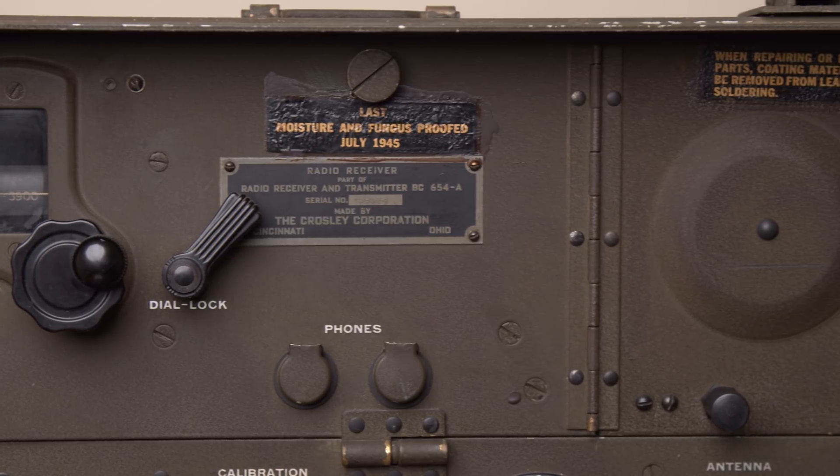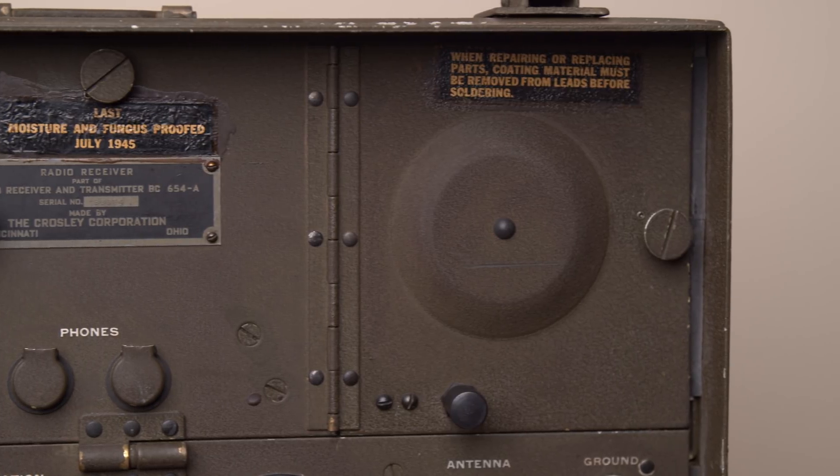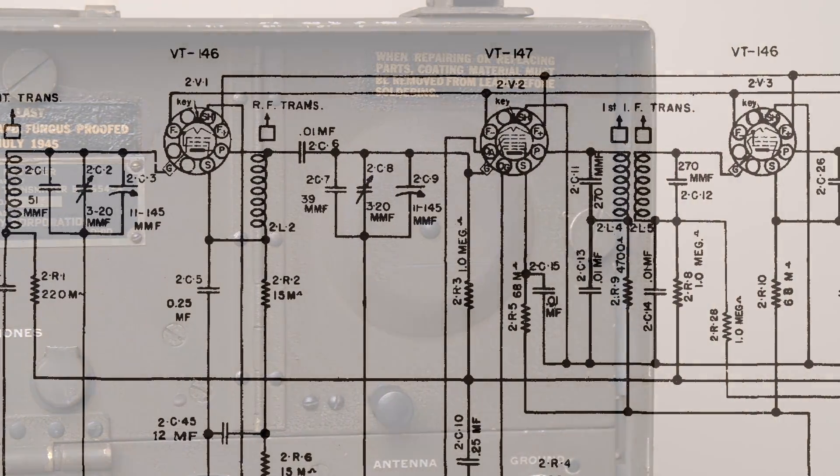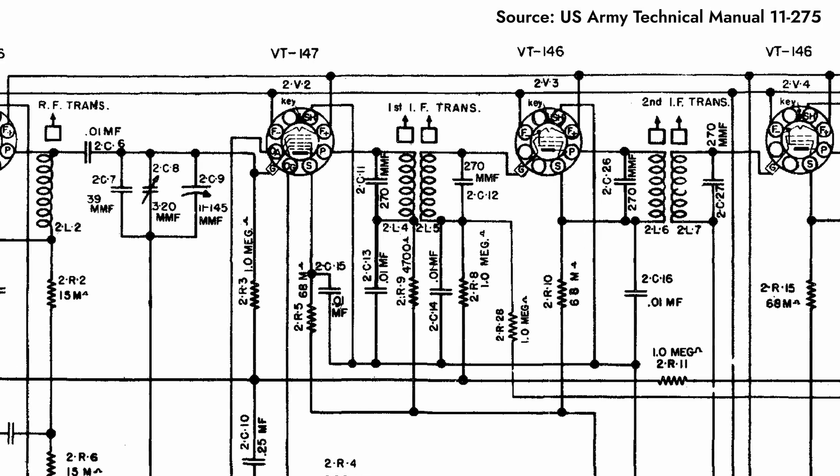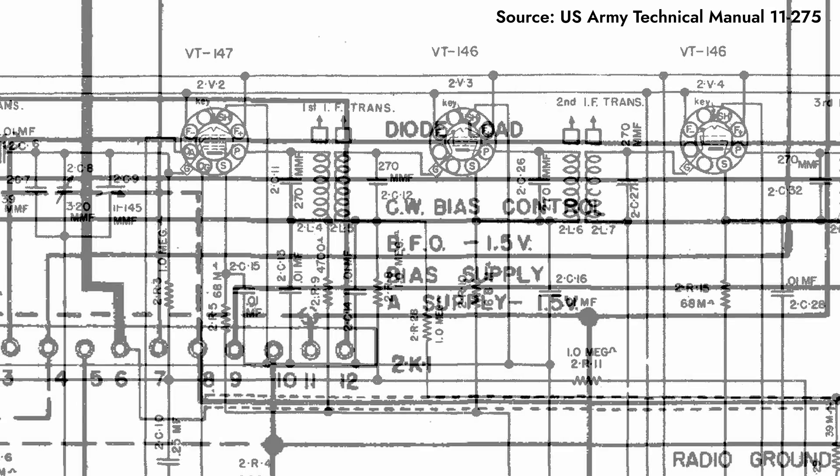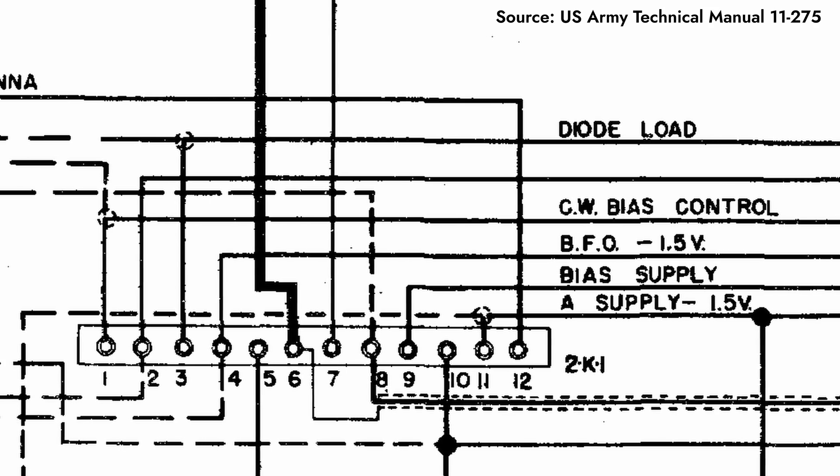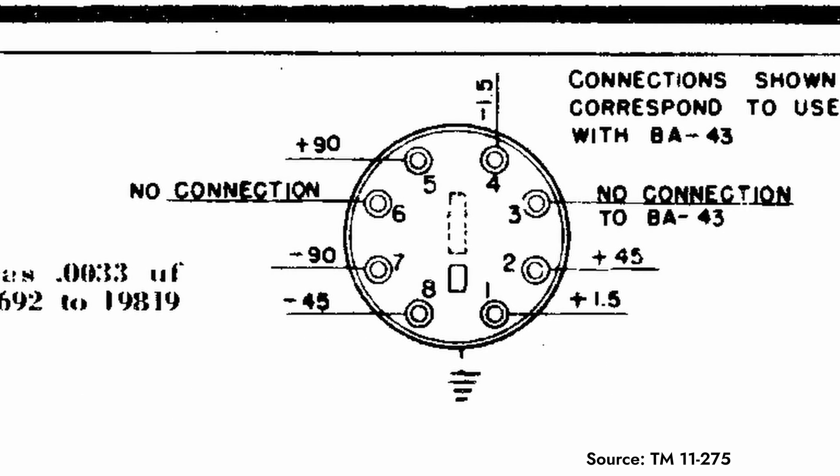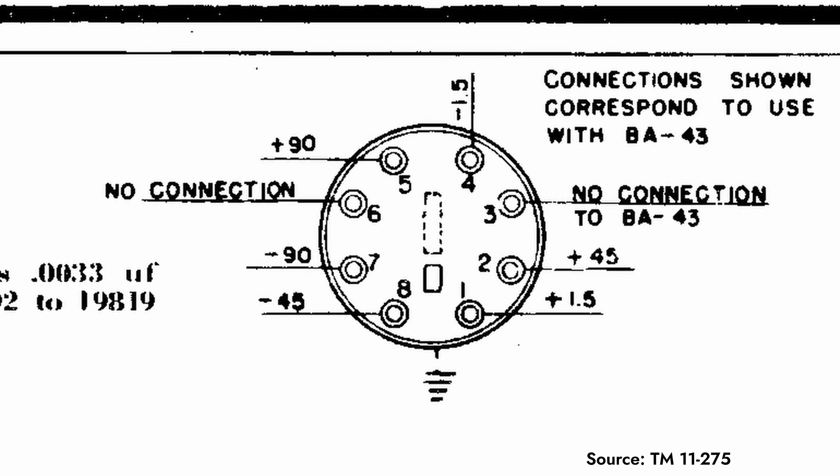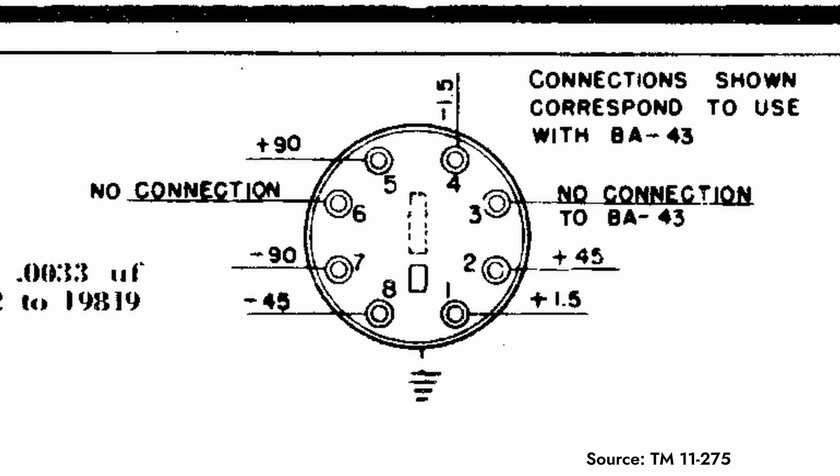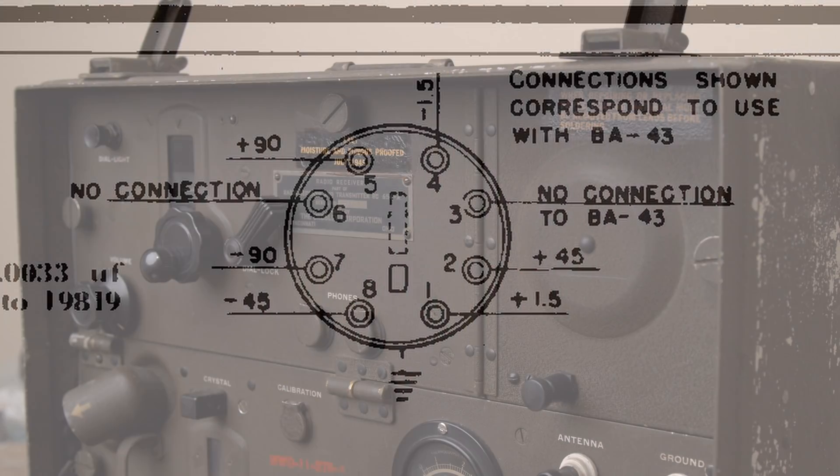The primary challenge to booting up the BC-654's receiver comes in finding a suitable power supply. The transistor wasn't developed until after the war, so wartime receivers used vacuum tubes to perform fundamental signal processing tasks, such as amplification and rectification. Tube radio sets tend to require a complement of different voltages due to the manner in which vacuum tubes operate. In the case of the Crosley receiver, I needed to provide three supplies: 1.5 volts for the tube filaments, 90 volts for the plates, and minus 45 volts for the grid bias.